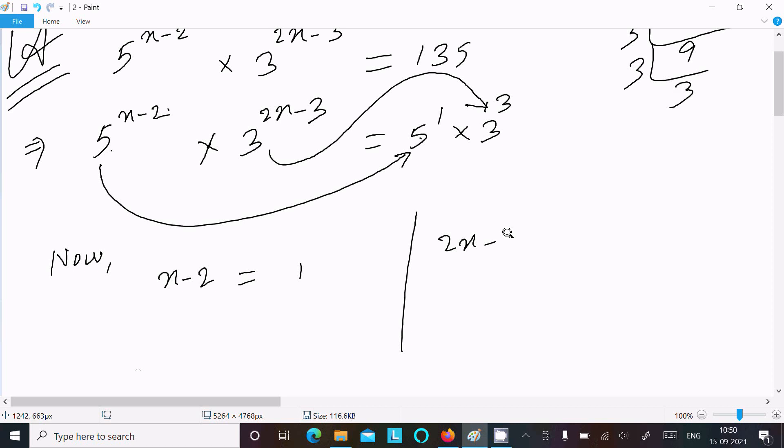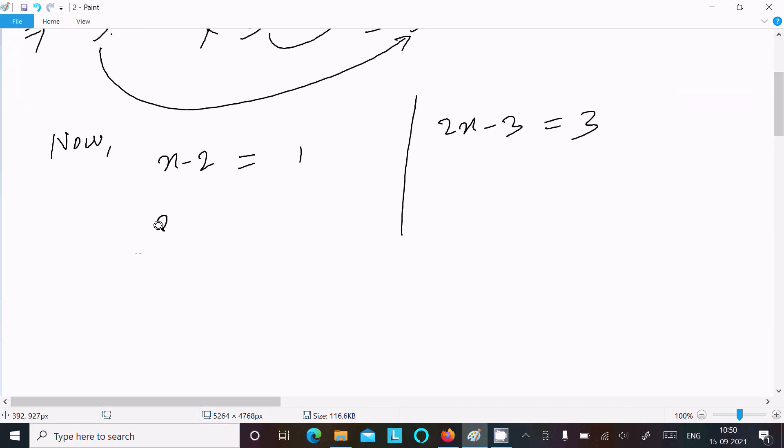After that, x equal to 1 plus 2, x equal to 3. Here 2x equal to 3 plus 3, so 2x equal to 6. X equal to 6 by 2, x equal to 3.